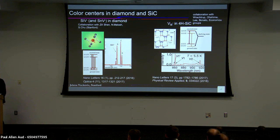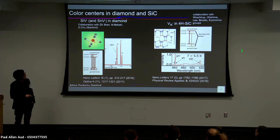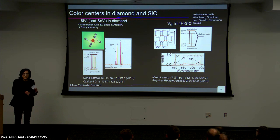The other set of systems we're studying are color centers in silicon carbide, specifically the 4-H polytype. Silicon vacancy in 4-H SiC is just a single missing silicon atom in the lattice. This is how the energy level structure looks, and here's the spectrum. You have two sets of color centers, V1 and V2, and the wavelength depends on which silicon atom in the lattice is missing.